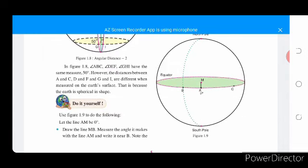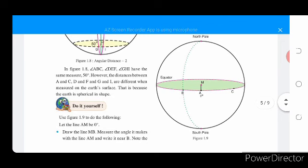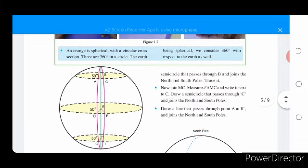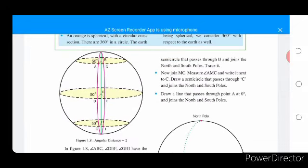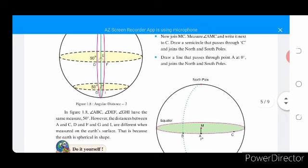Do it yourself. Use figure 1.9 to do the following. Let the line AMB be 0 degrees. Draw the line MB, measure the angle it makes with the line AM and write it near B. Note the semicircle that passes through B and joins the north and south poles, trace it. Now join MC, measure angle AMC and write it next to C. Draw a semicircle that passes through C and joins the north and south poles. Draw a semicircle that passes through A at 0 degrees and joins the north and south poles.